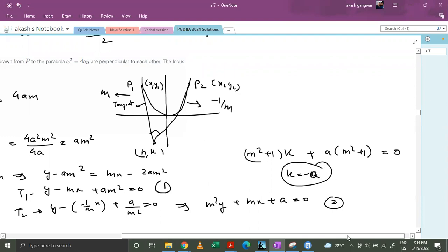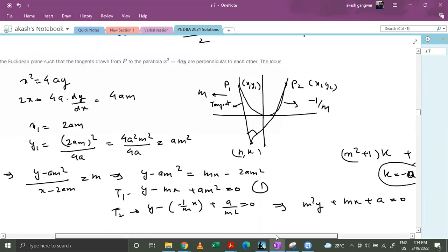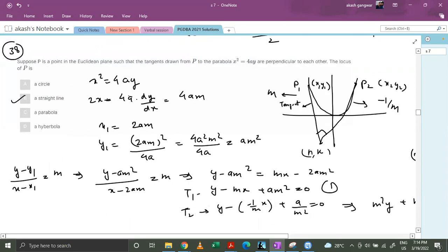This is our equation. This is a straight line. So basically our locus is a straight line. So we have done it from the very basics. Even if you don't know any formula of tangent and equation of tangent then also you can do it from the basics.